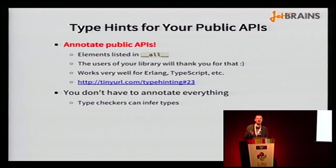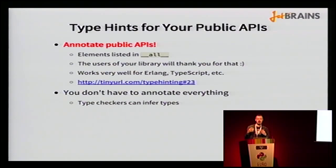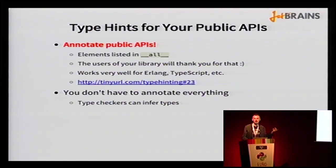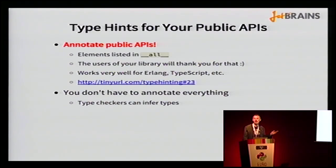Documentation for your public APIs will make your users happier. It acts as better documentation and as a safety net around your library — defining a clear interface between your code and user code. If an error occurs, users can run a type checker or check their IDE and see they're using the library incorrectly. They won't report wrong bugs to your tracker because they misread the documentation. Types are like better documentation. You don't have to annotate everything — just annotate your public API.